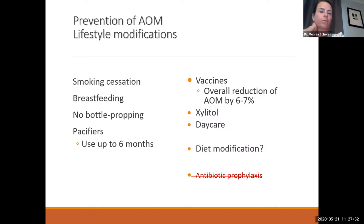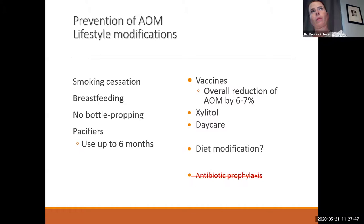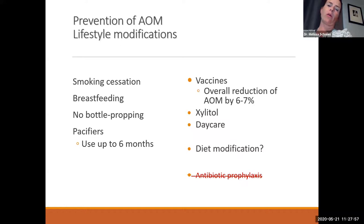Pacifiers: the negative pressure they generate can help the eustachian tubes drain the ears, but there's a fine line about when to stop using them. The AAP recommends use up to 6 months, but ear infections peak around 1 to 2 years. Pacifiers may help in the short term but can cause orthodontic issues long-term. Xylitol has been shown to decrease incidence of ear infections, but you'd basically have to chew gum constantly — and kids at peak ear infection age don't readily chew gum.